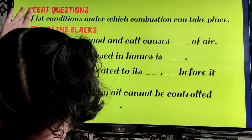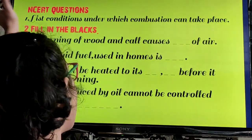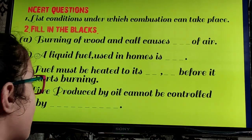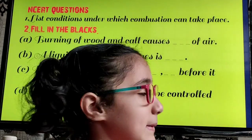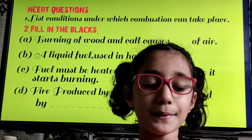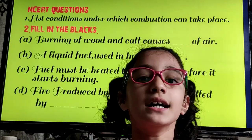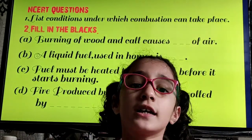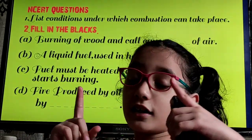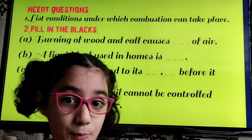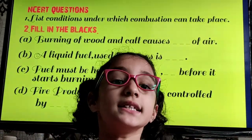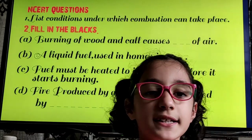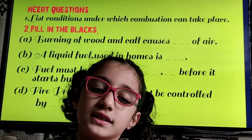Question Number 1: List conditions under which combustion can take place. Combustion can take place under: Number 1, a combustible substance. Number 2, oxygen, which is the supporter of combustion. Number 3, attainment of ignition temperature of the substance.